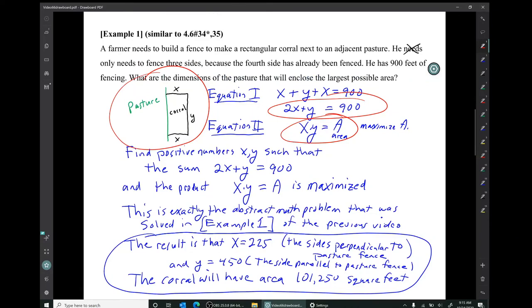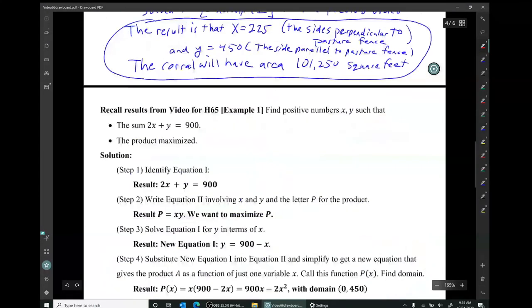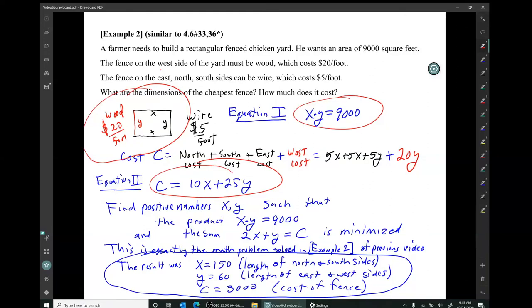The difference is that in the first problem, the sum had a fixed value and we were trying to maximize the product. Whereas in the second problem, it was the product that had a fixed value and we were trying to minimize the sum.